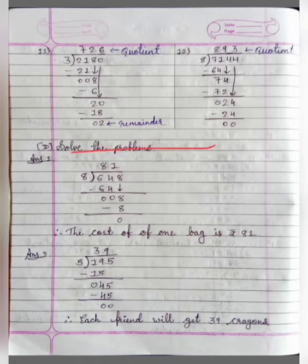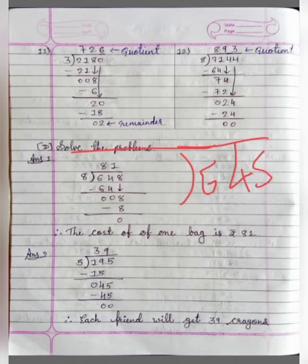See in your textbook. Number 1: 8 bags cost Rs. 648. Find the cost of 1 bag if each bag costs the same. Here we will divide 648 by 8. 8 eights are 64. Here we will get 0.